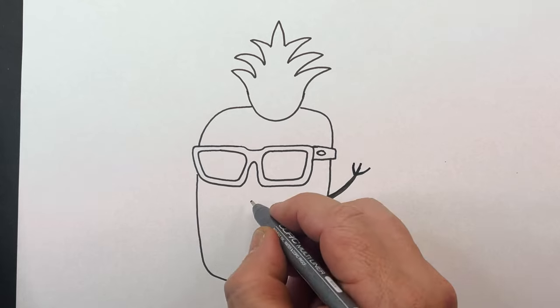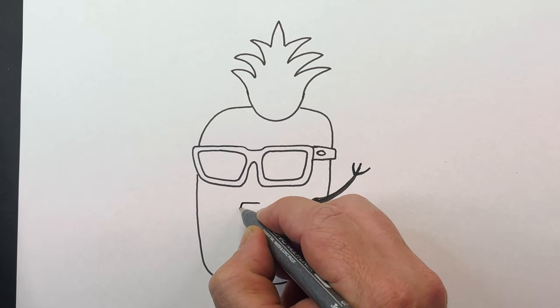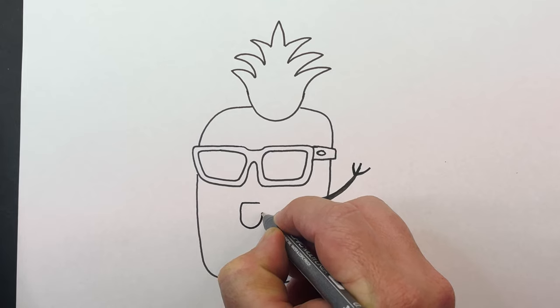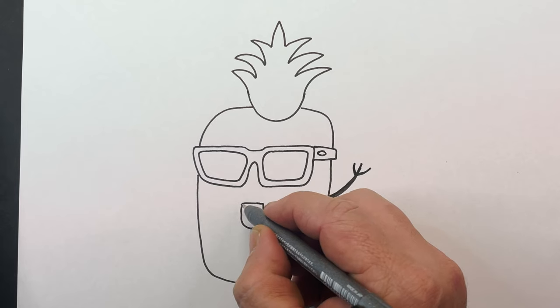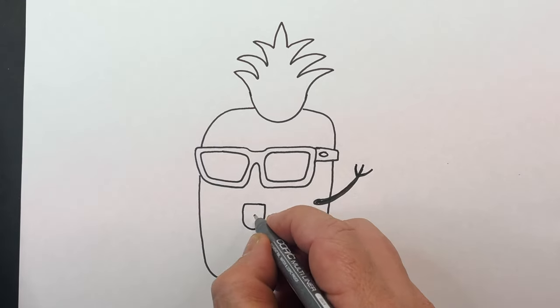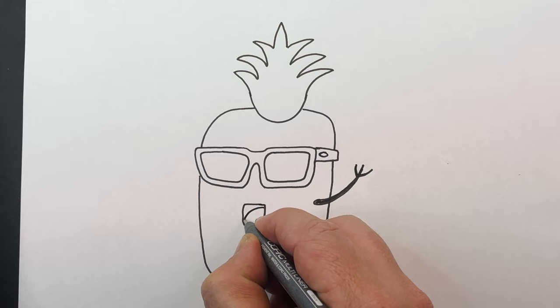Now we're going to have the mouth and because the pineapple is going to be singing directly underneath the glasses we're going to draw a shape like so. Almost an upside down archway or a U with a line across the top. Now we're going to bring the mouth in. That's the tongue.